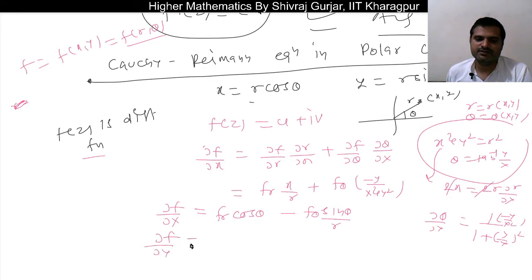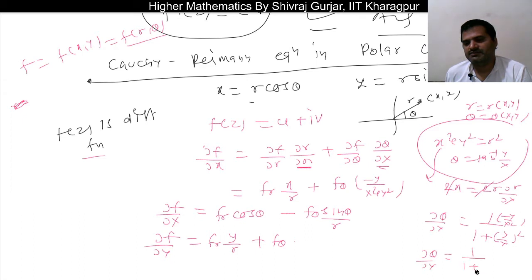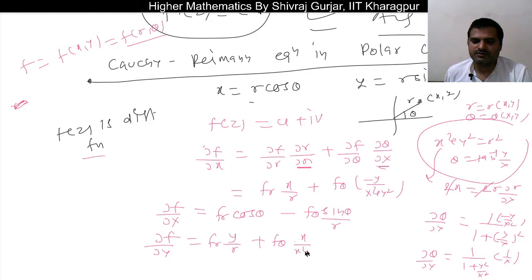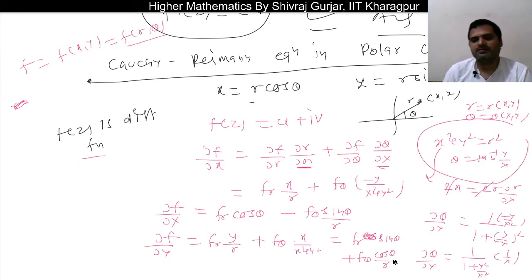For ∂f/∂y, the process is the same. Here ∂r/∂y = y/r. And for ∂θ/∂y, differentiating tan⁻¹(y/x) with respect to y gives 1/x · 1/(1 + y²/x²) = x/(x² + y²). Substituting: x = r cos θ, y = r sin θ, so ∂f/∂y = f_r sin θ + f_θ cos θ/r.